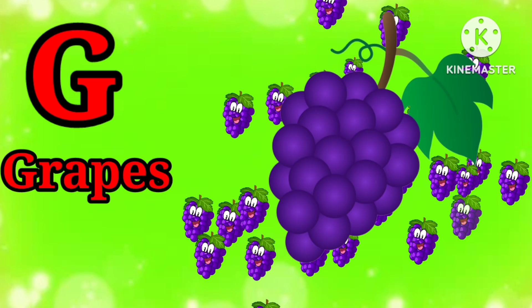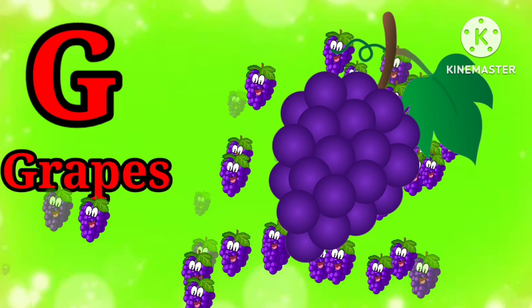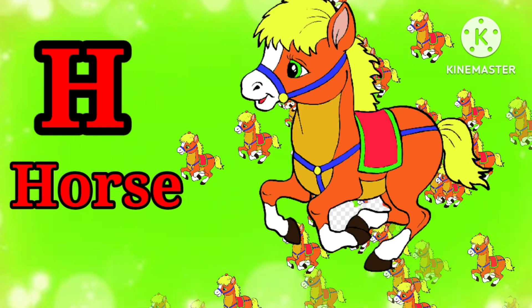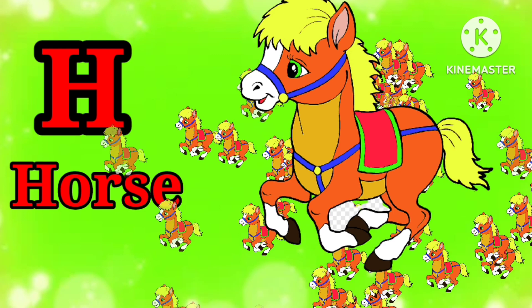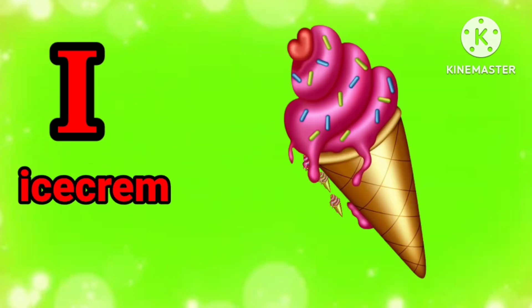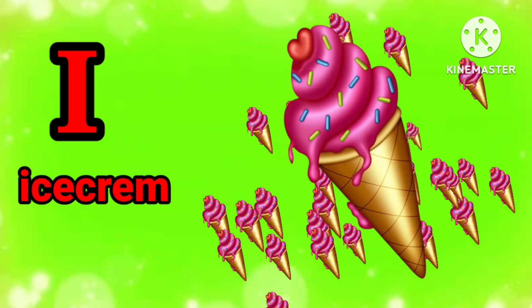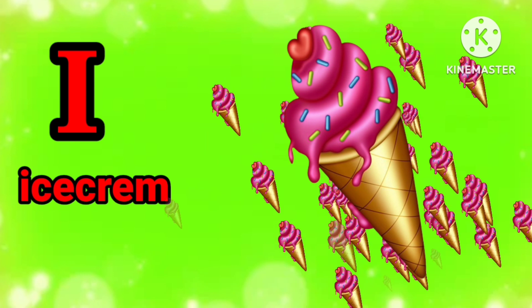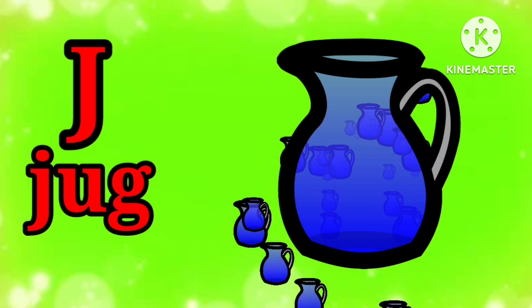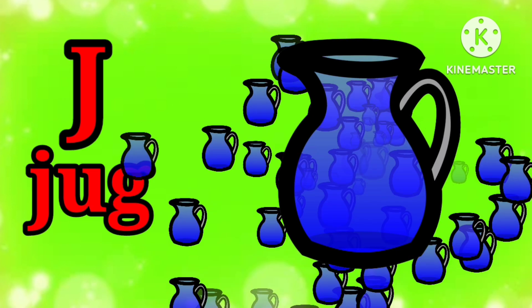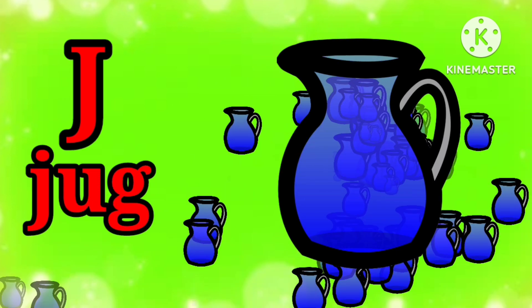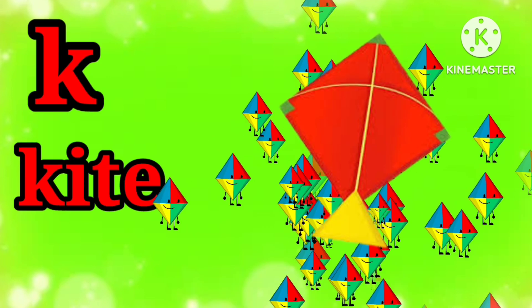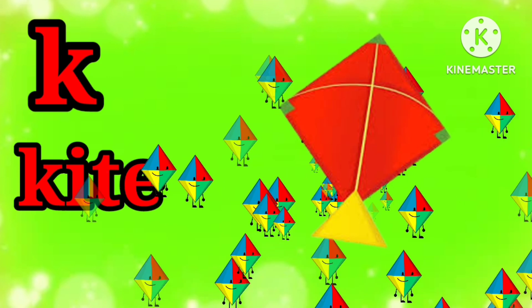G for grabs, H for horse, I for ice cream, J for jug, K for kite.